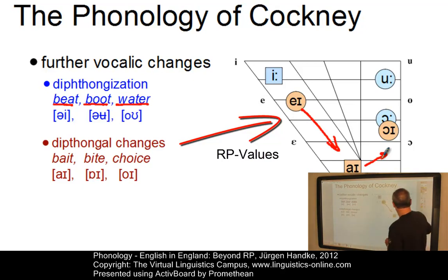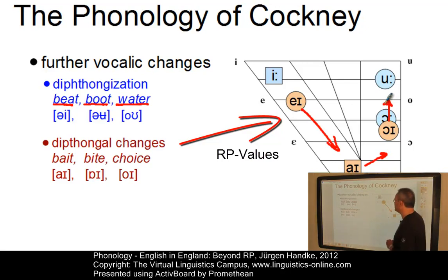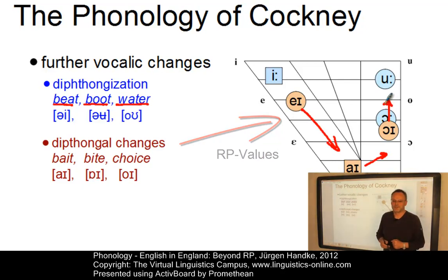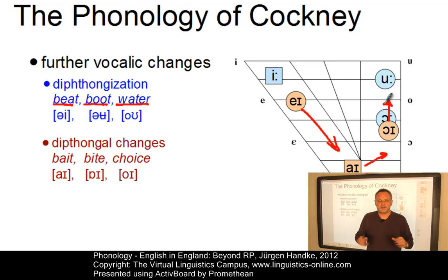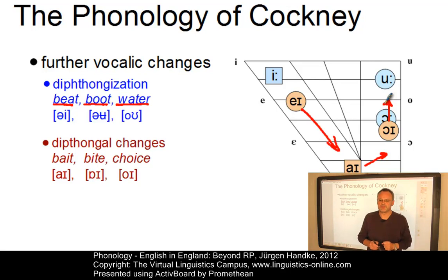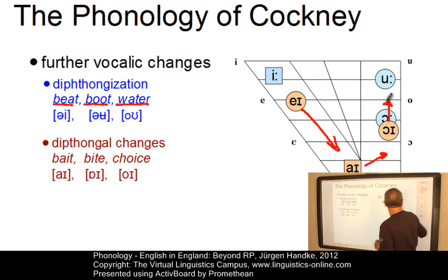And finally, 'choice' will be moved up to 'chice.' We should add that like RP, Cockney exhibits a low degree of rhoticity. Let us now see which properties of Cockney are used in Estuary English.